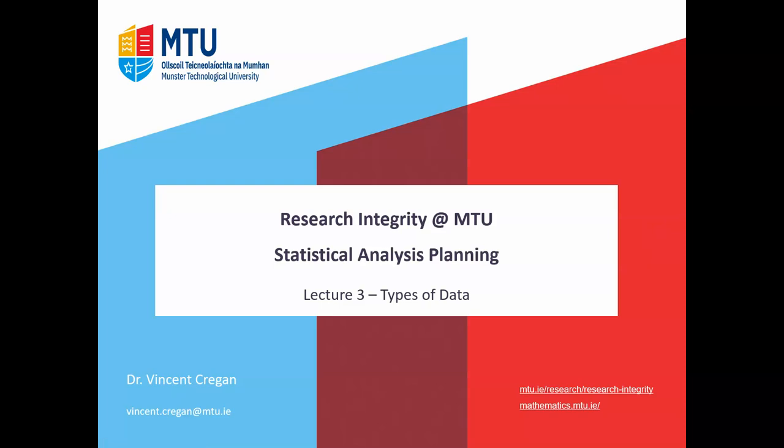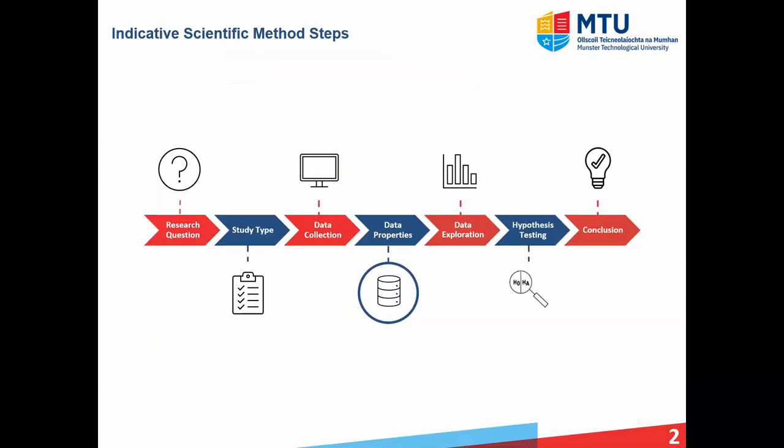In lecture three, we're going to look at types of data. Returning to our indicative scientific method steps in the previous lecture, we looked at how you collect data via various sampling techniques. Now that we have the data, we want to look at its properties and that will allow us to continue to do the exploration and finish off with the hypothesis testing.